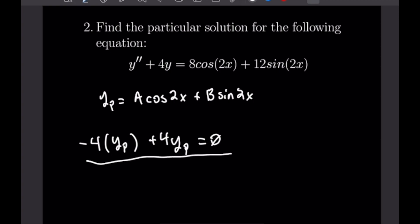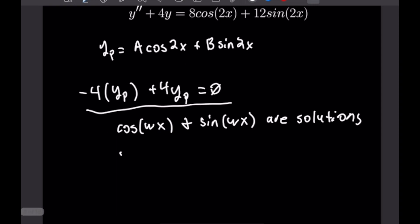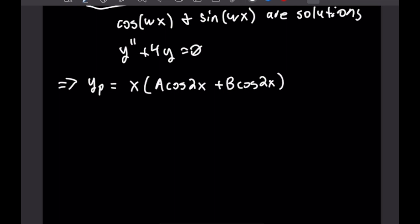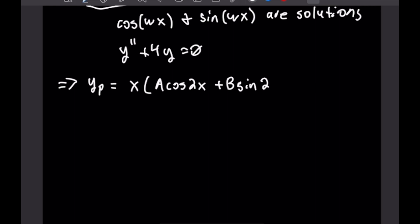This means cos(2x) and sin(2x) are solutions to the corresponding homogeneous equation Y'' + 4Y = 0. As established earlier, we need to increase the degree of A and B in our particular solution by 1. So our new Y_p = x(A·sin(2x) + B·cos(2x)), where we now have a degree-1 polynomial in front of our cosine and sine terms.